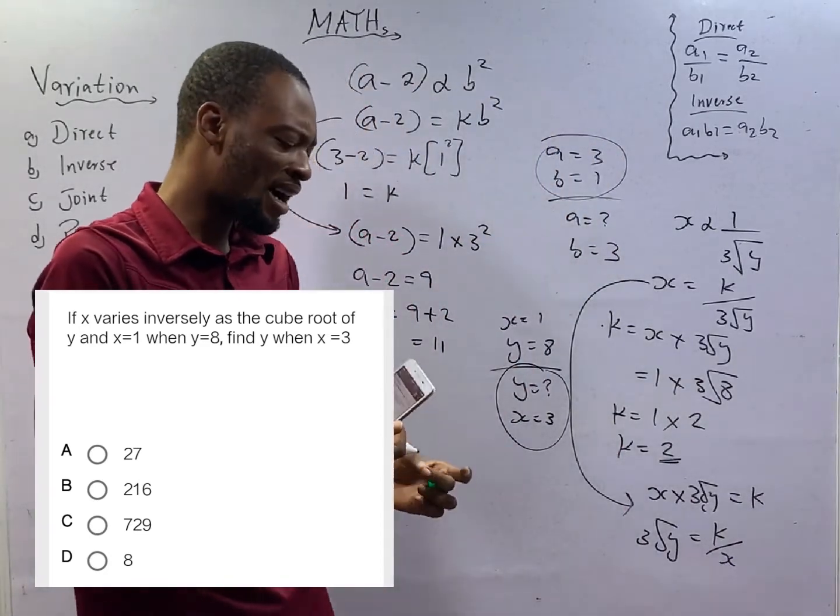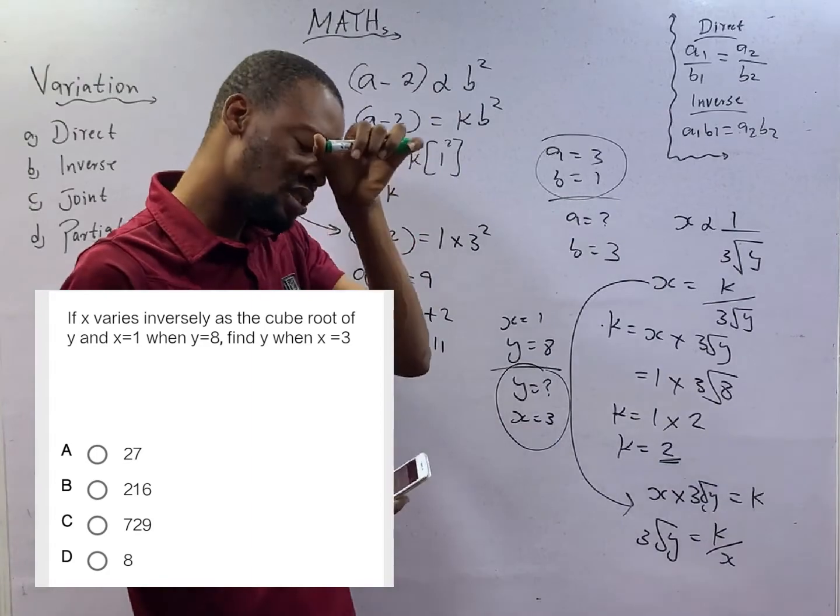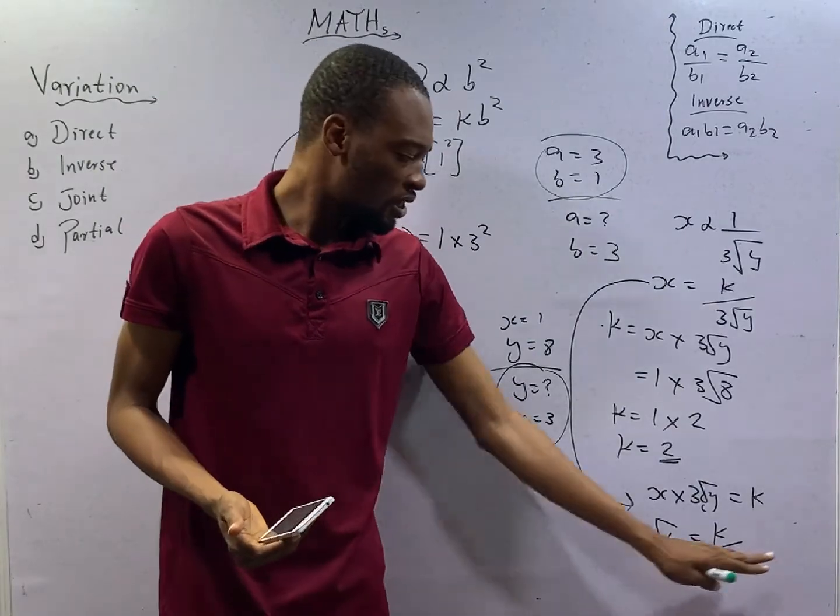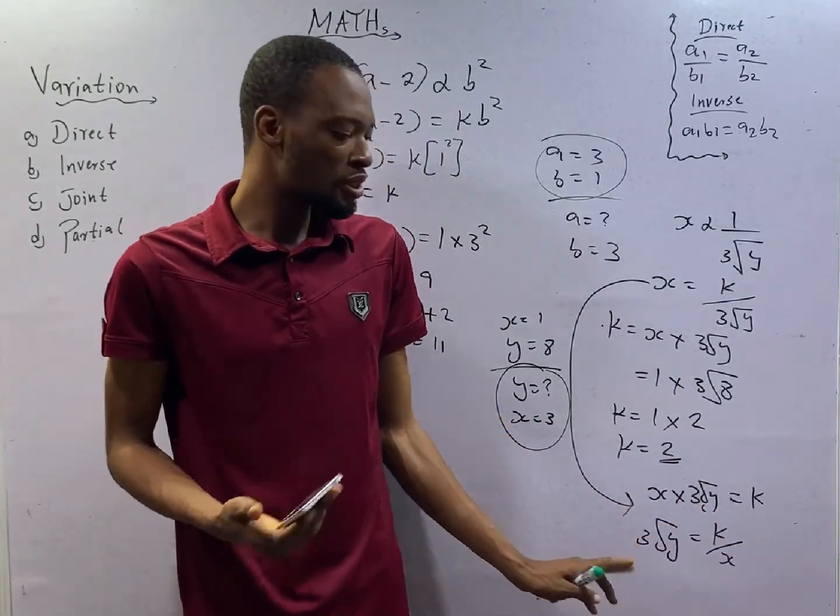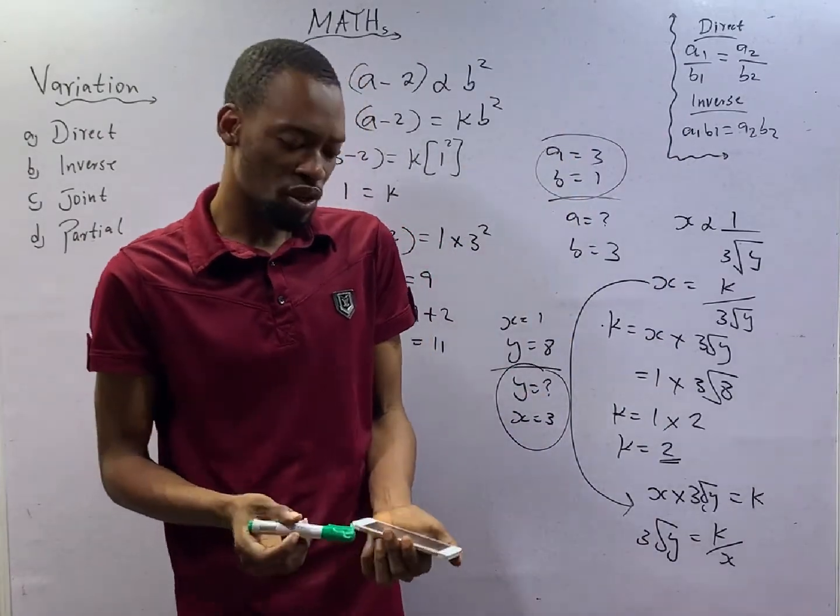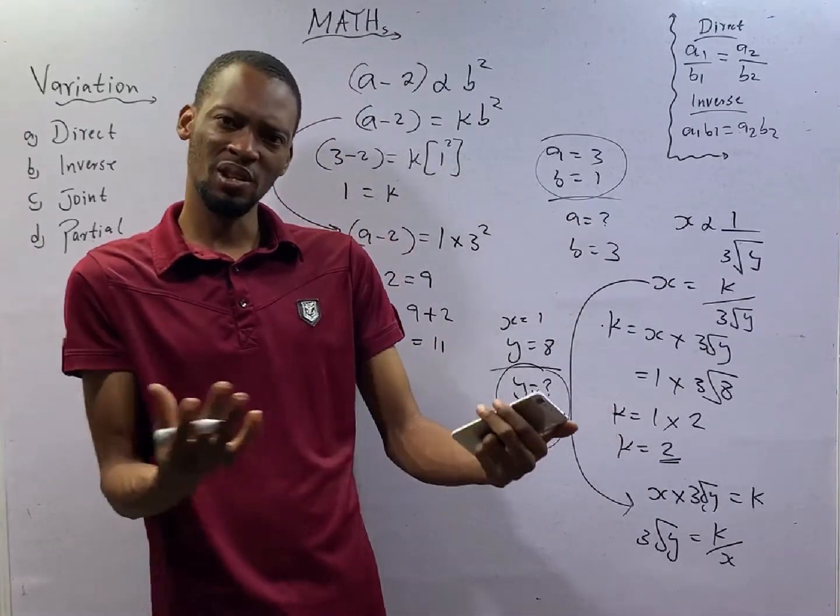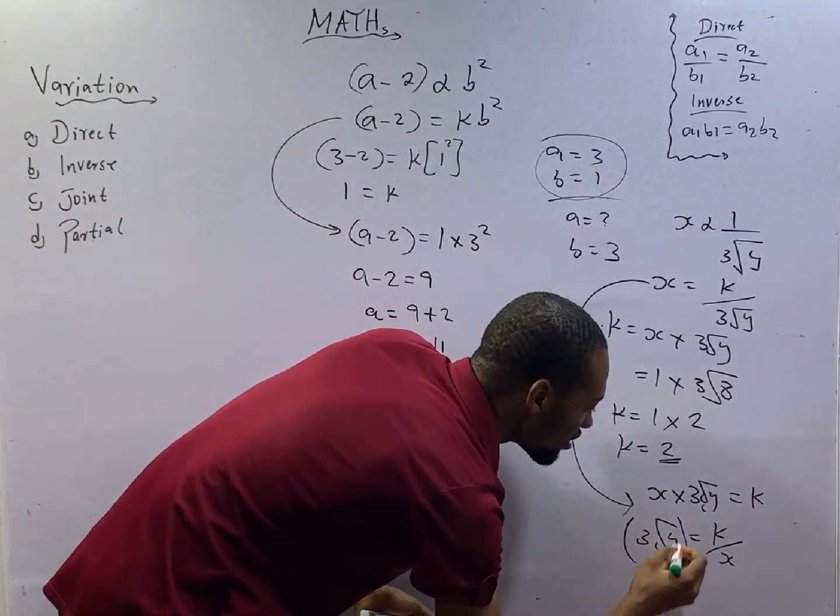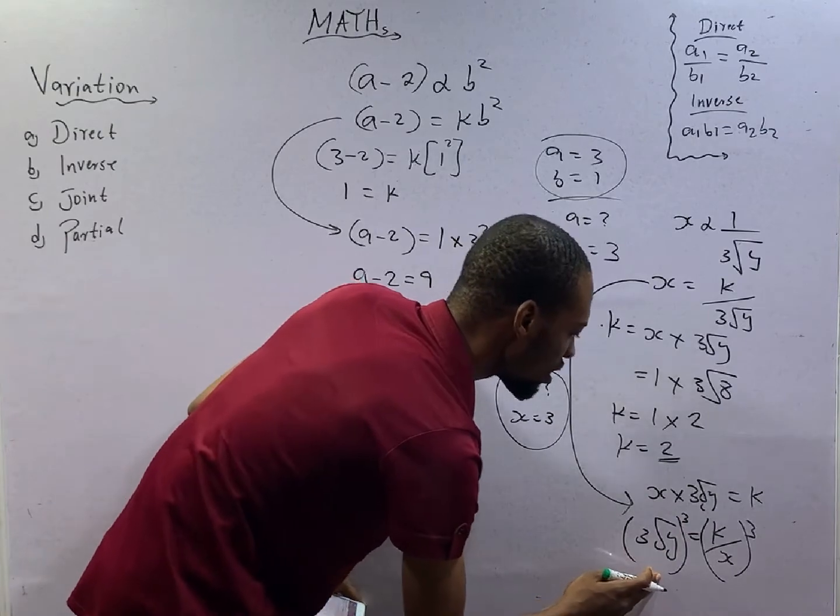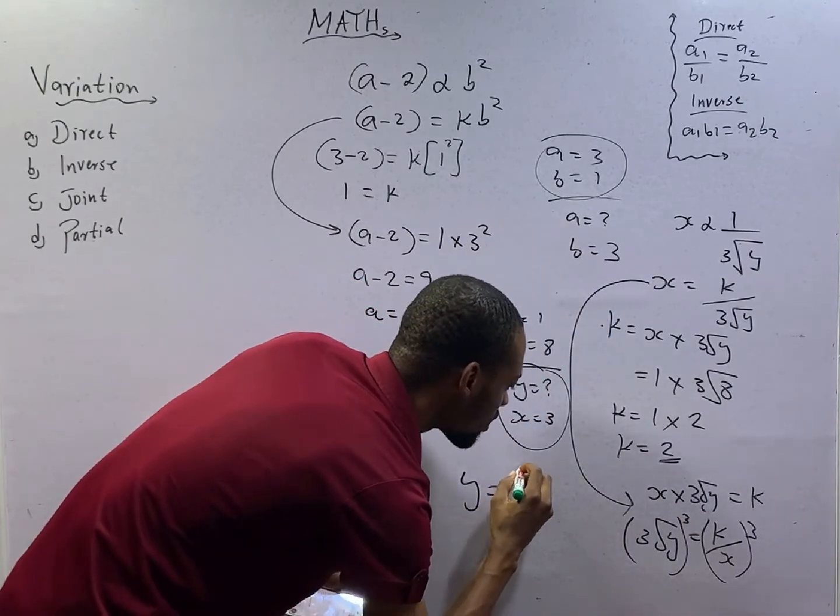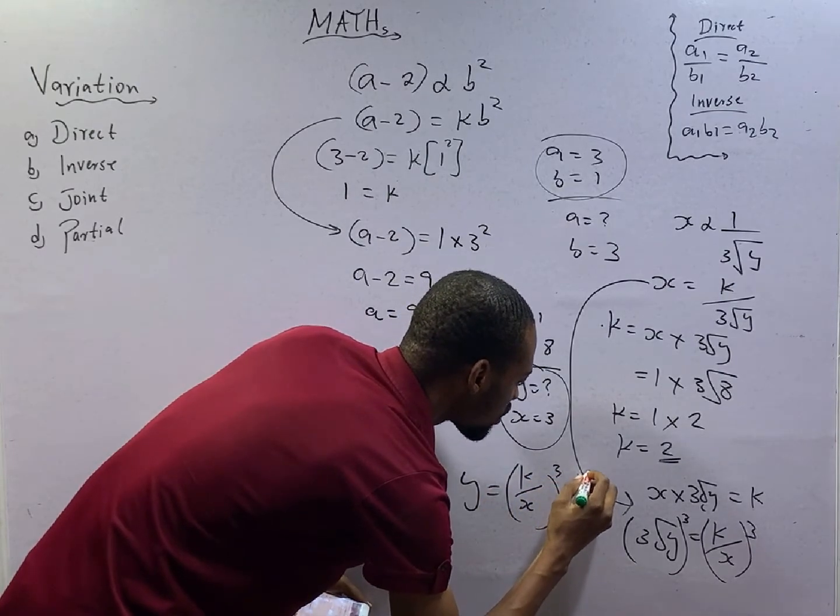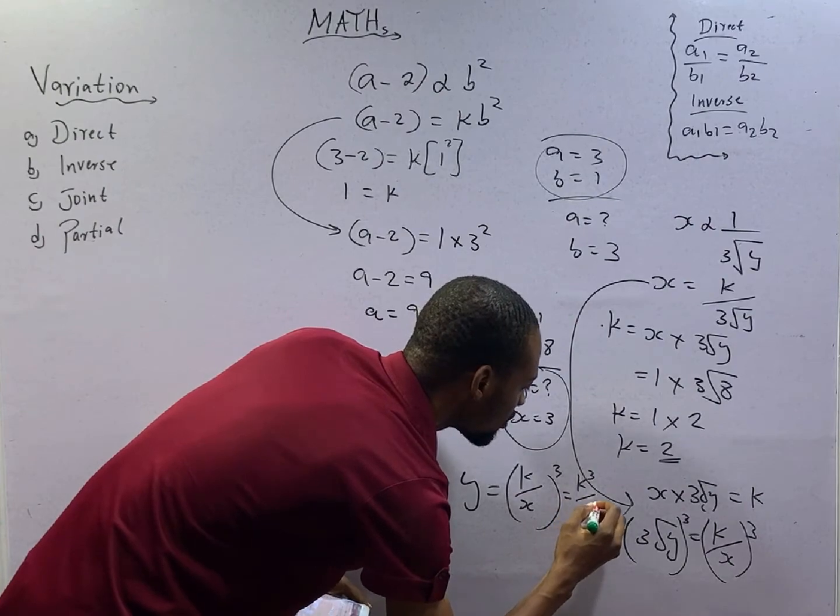Now, remember under change of subject formula, that should be some episodes back, I told you that to remove cube root, you will look for the cube of both sides. Anything that has cube root, if you raise everything to the power of 3, cube root will cancel. And since we are dealing with equation, anything that happens to one side should happen to the other side. So if everything here is raised to the power of 3, and everything here is raised to the power of 3, we cancel cube root and we will be left with y equals k over x raised to the power of 3, which is k raised to the power of 3 over x raised to the power of 3.